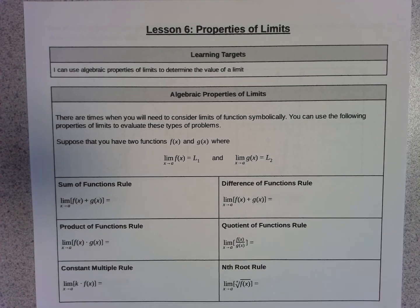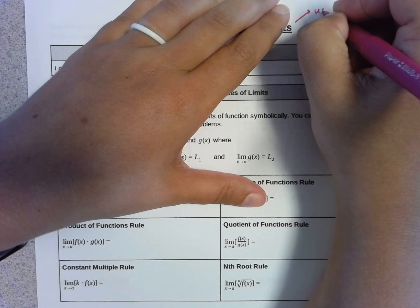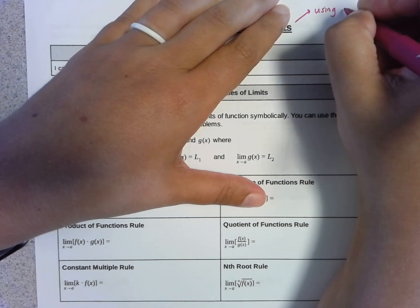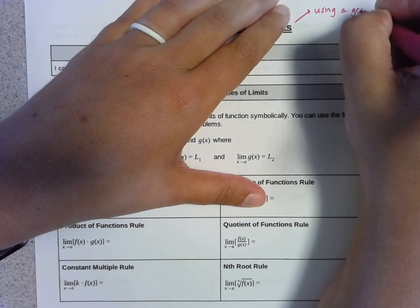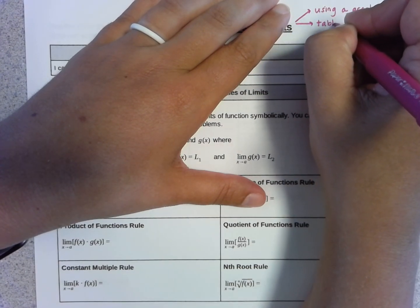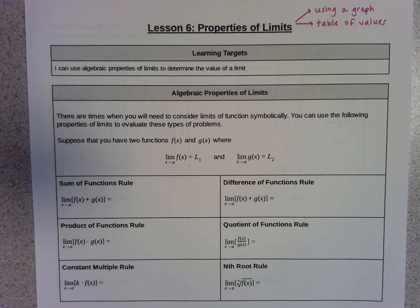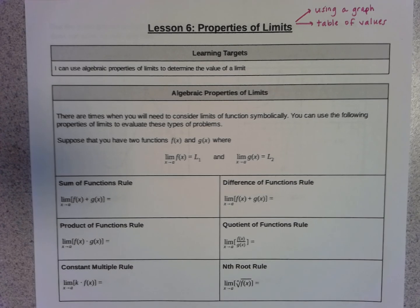Hi everybody. So in today's video, we're going to be doing Unit 1, Lesson 6, which is all about properties of limits. Thus far in the chapter, we've already learned that we can find a limit by looking at the graph of a function or by looking at a table of values. Today we're going to add a third option, which is using properties of limits.